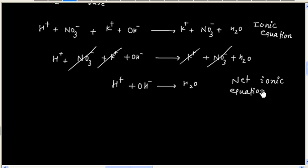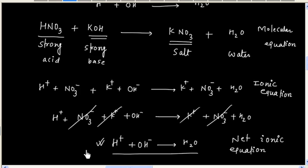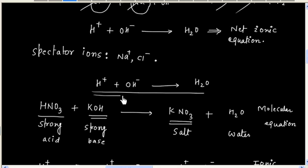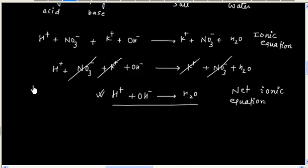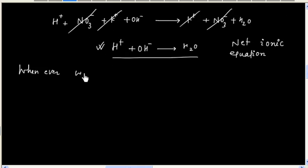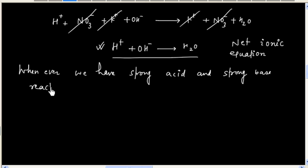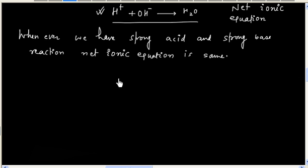One important point: whenever we have a strong acid and a strong base reaction, the net ionic equation is the same. In both examples, we have H⁺ + OH⁻ → H₂O — that is, one mole of water formation. So we can say that whenever we have a strong acid and a strong base reaction, the net ionic equation, or overall ionic equation, is the same: H⁺ + OH⁻ → H₂O.